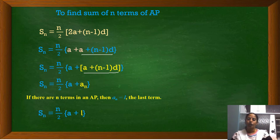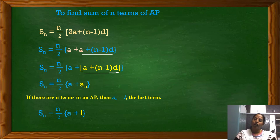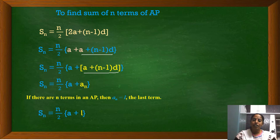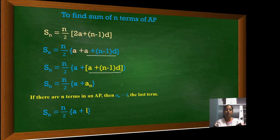Children, now you know the formula to find the sum of n natural numbers. You also came to know how to find the sum of n even numbers. Now you also know the general formula to find the sum of n terms of an AP — when a and d are known, and when a and the last term are known. Let us solve a few problems on these.